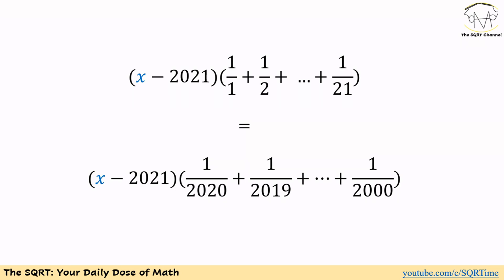On the right-hand side we will have x minus 2021 times 1 over 2020 plus 1 over 2019 and all the way to 1 over 2000.